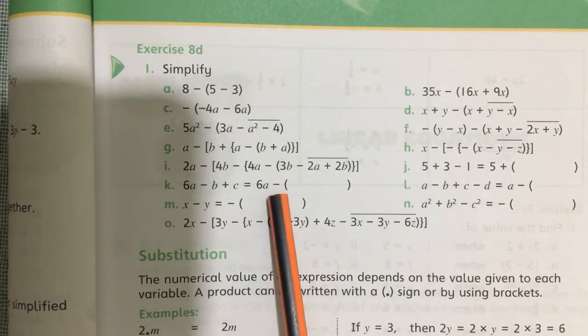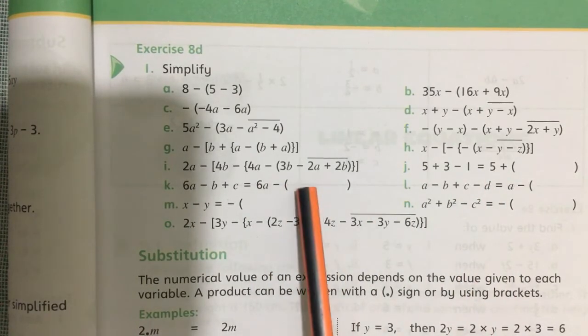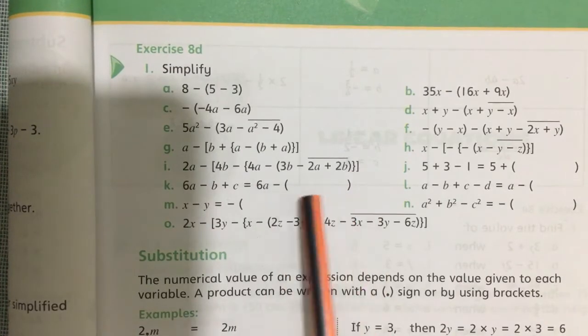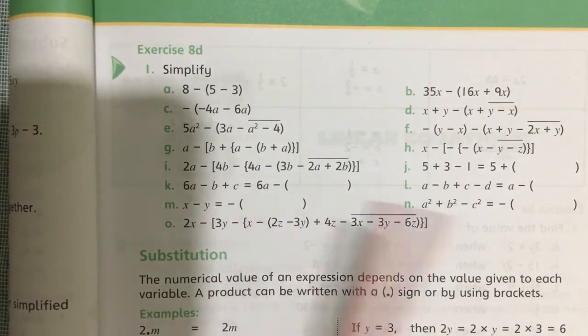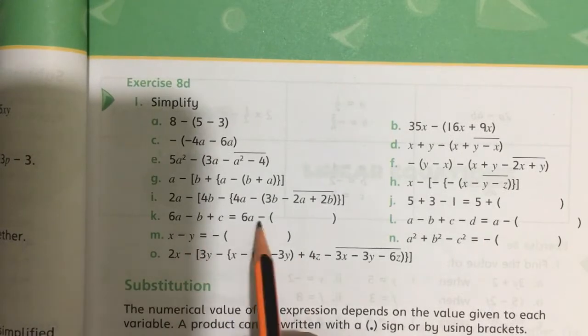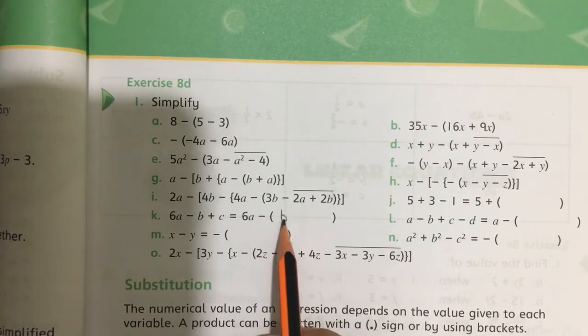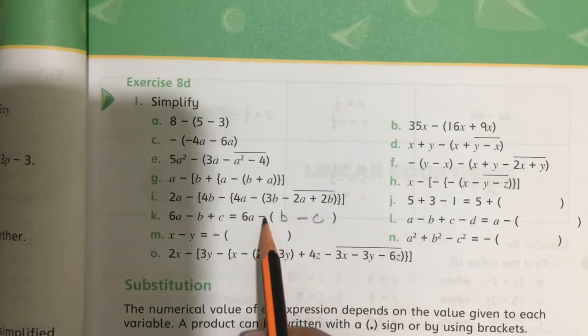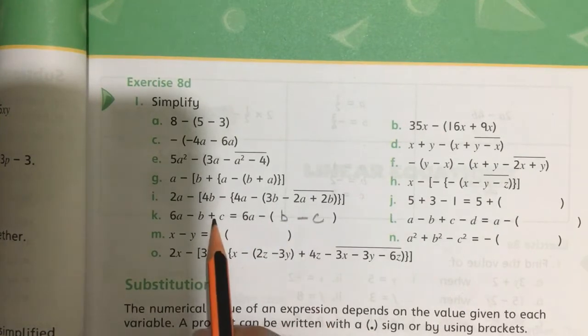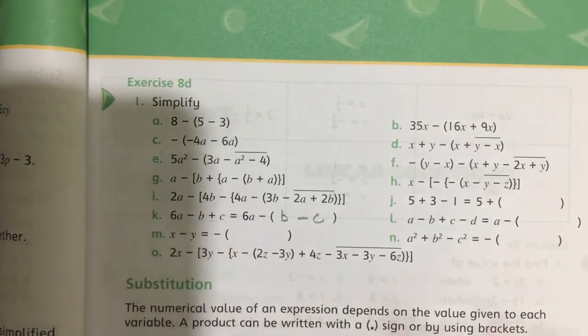When there is a minus sign outside, when you open the bracket, the inside signs change. So how will you write the answer? 6a minus b minus c. Why? Because minus times minus equals plus, so here c will get a plus sign.